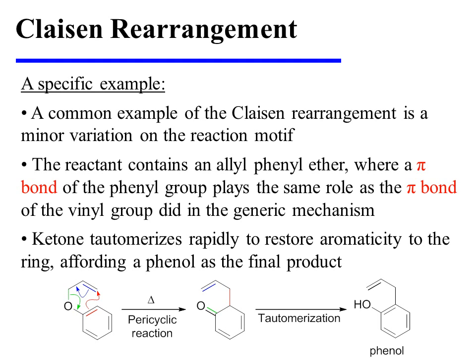A common example of the Claisen Rearrangement is actually a minor variation on the reaction motif. In this specific example, the reactant contains an allyl phenyl ether, where a pi bond of the phenyl group will actually play the same role as the pi bond of the vinyl group did in the generic mechanism — it attacks the carbon that is six atoms away. A second pi bond is displaced to the adjacent bond, and that results in the cleavage of a sigma bond, which forms our final new pi bond. In this instance, the product of the reaction is a ketone. But this particular ketone rapidly tautomerizes to restore aromaticity to the ring, affording a phenol as the final reaction product.